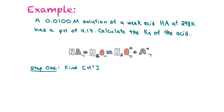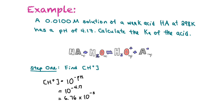Let's try an example. We have a 0.0100 mol/L solution of a weak acid at 298 Kelvin with a pH of 4.17, and we're asked to calculate the Ka. The first step is to find the concentration of hydrogen ions, which equals 10 to the negative pH — that is 10 to the negative 4.17 — which equals 6.76 times 10 to the negative 5 mol/L.